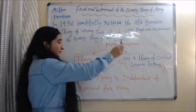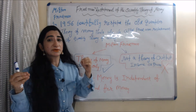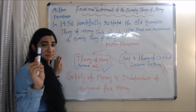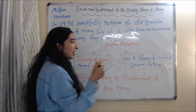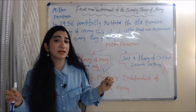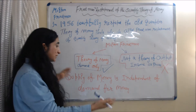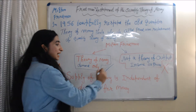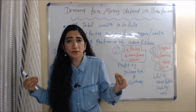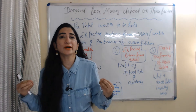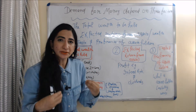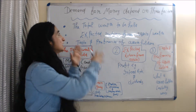First of all, Milton Friedman clearly says his quantity theory of money is a theory of money demand only — not a theory of output, income, or prices. In this theory, Milton Friedman basically explains that supply of money is independent of demand for money. We will first talk about what the demand functions are according to this theory.